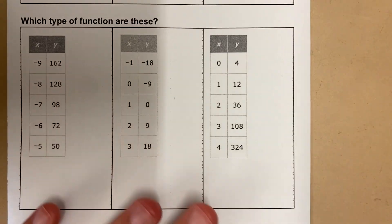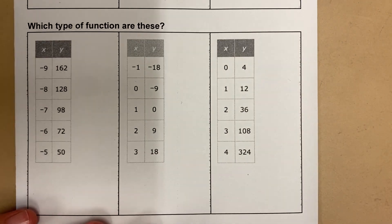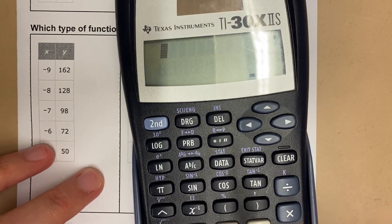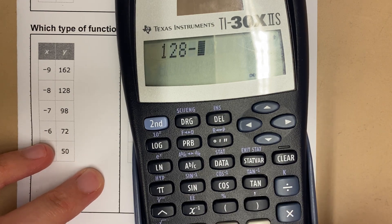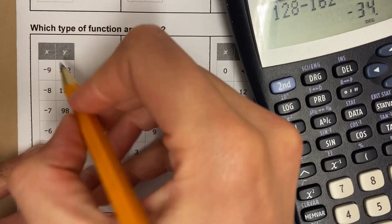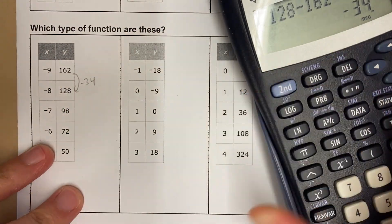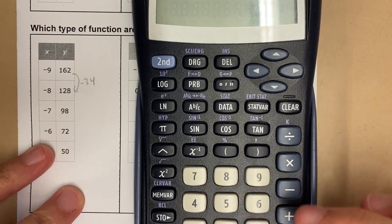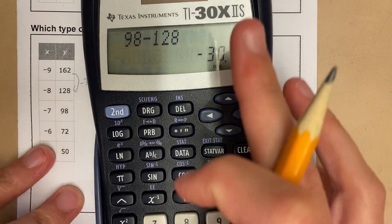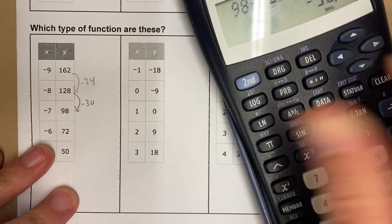Let's take a look at a couple examples. If I'm asked, what kind of function is this? How do I figure it out? Well, what I do first is I look for linear first, because linear is the easiest ones to catch. So I'm going to do 128 minus 162. So that tells me this is going down 34, this is minus 34. My question is, is this also minus 34? I could do 98 minus 128. This is minus 30.